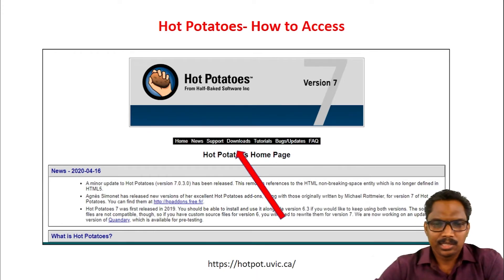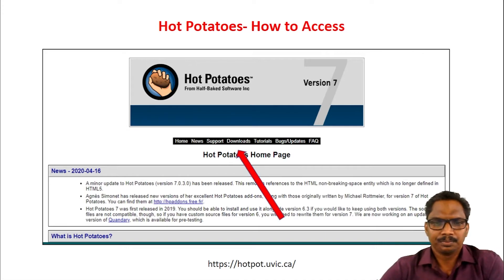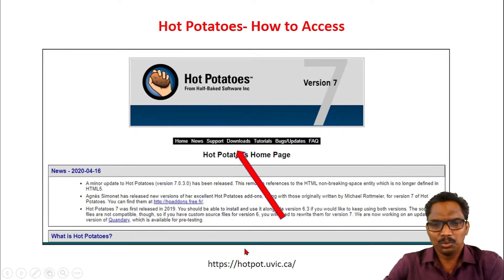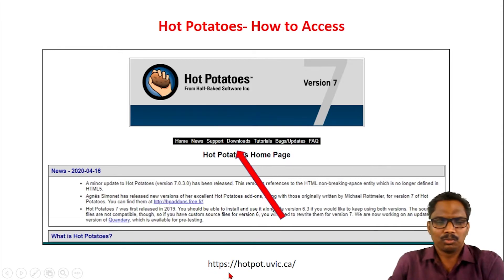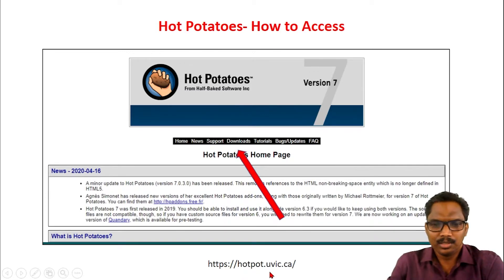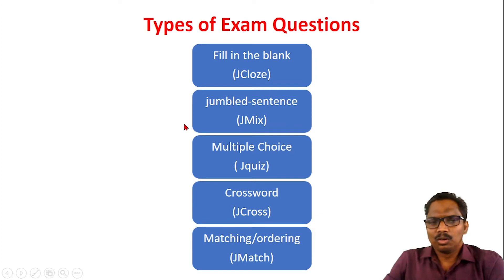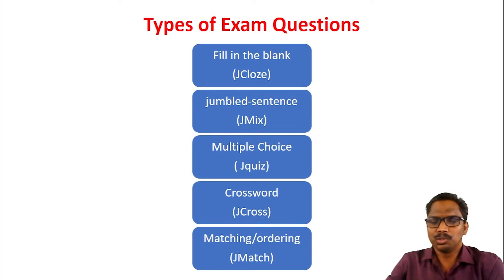What you are seeing on the screen is a screenshot of the Hot Potatoes website. When you access the Hot Potatoes website, this is how it will look. You can access it by doing a normal Google search, or you can directly type the website address: https://hotpot.uvic.ca/. Type this in the address bar and it will help you reach the Hot Potatoes website.